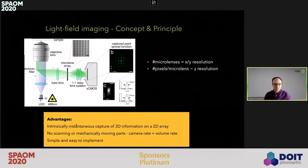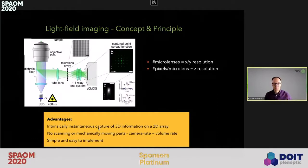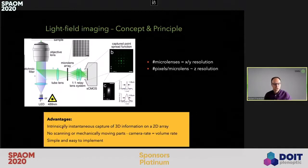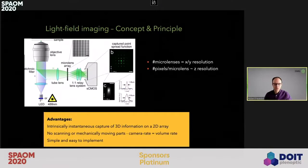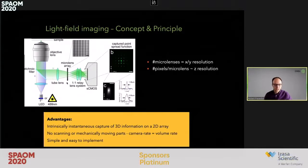Light field microscopy is really elegant and powerful for fast volumetric imaging, because it allows us to instantaneously capture three-dimensional volumes on a two-dimensional camera plane. Because there is absolutely no scanning or mechanically moving parts, the camera frame rate of the microscope is also the volume rate at which we can image. On top of this, it is fairly easy and simple to implement, because we only need to introduce a microlens array into the imaging path.